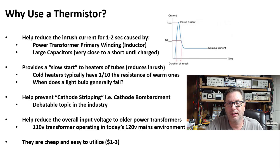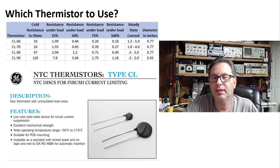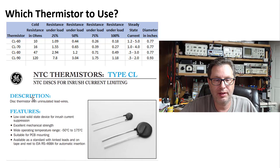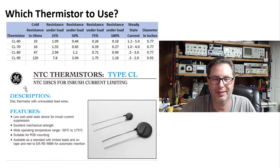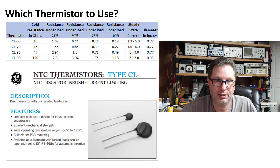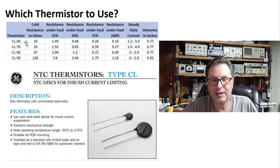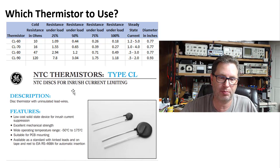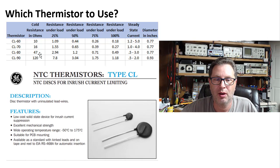And the last reason to use a thermistor: they're dirt cheap. I buy them in bulk for about 80 cents a piece or less. Even ordering a pack of five on eBay, you'd pay between one and three dollars. So why not use one? GE makes some, Amphenol makes some — they're typically the type CL, for current limiting, and typically I use an NTC, the negative temperature coefficient. In tube amplifiers I've seen everything used from a CL60 up to about a CL90.